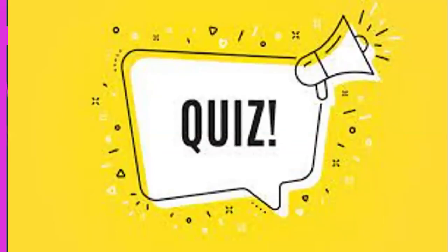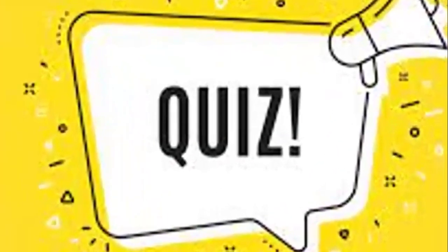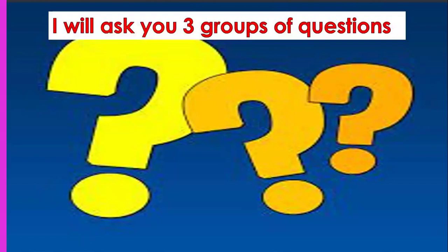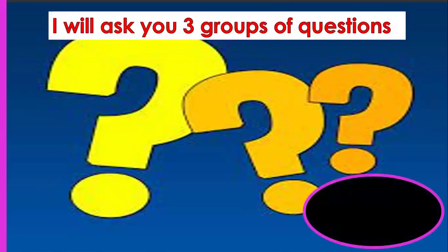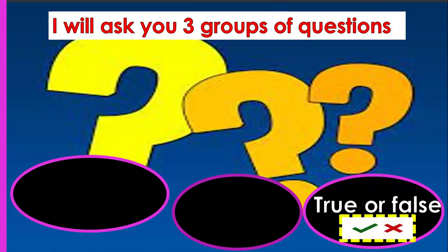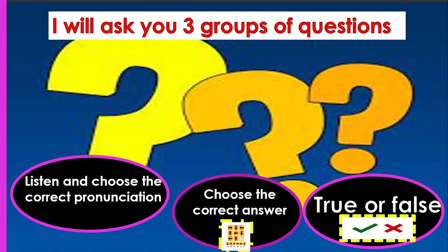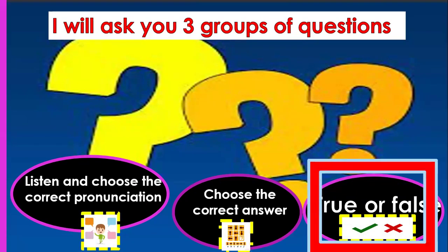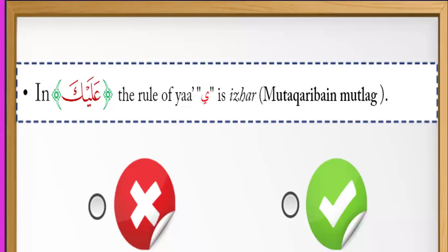Now it's a quiz. Are you ready? I will ask you three groups of questions: number one — true or false; number two — choose the correct answer; number three — listen and choose the correct pronunciation. True or false: in the word عَلَيْكَ, the rule of ياء is إظهار — متقاربين مطلق. مطلق means the first letter has حركة and the second has سكون. عَلَيْكَ — yes, the first letter has حركة and the second has سكون. True.